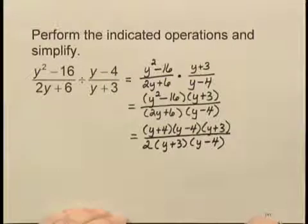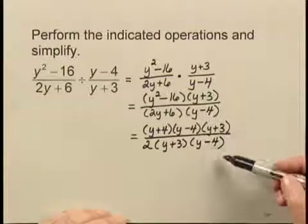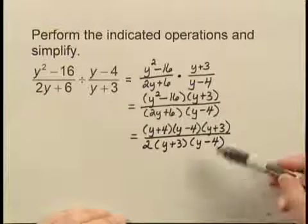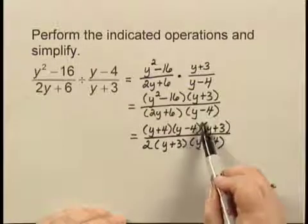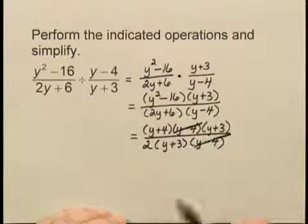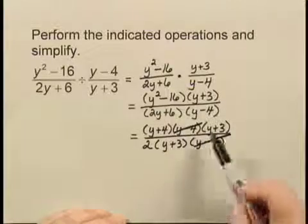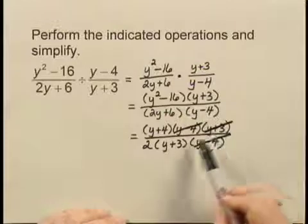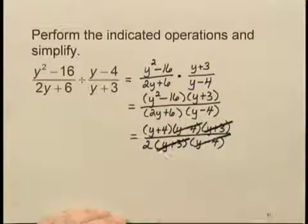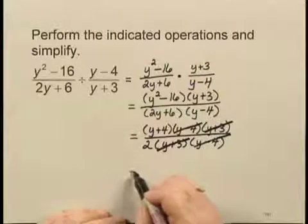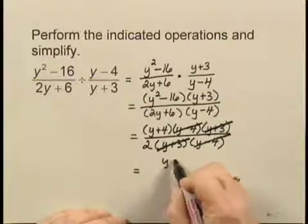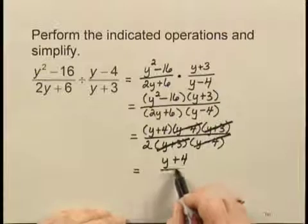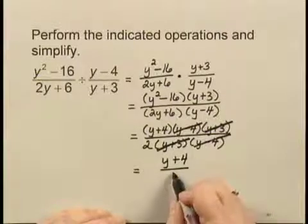Now that this is completely factored, I look for common factors in the numerator and the denominator. The numerator and denominator have a common factor of y minus 4, so I can cancel that. They also have a common factor of y plus 3, so I can cancel those. There are no more common factors, so the simplified answer is y plus 4 over 2.